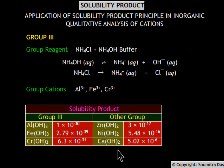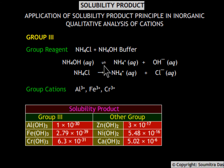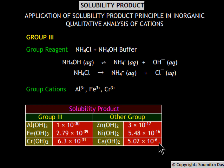In Group 3, the reagent is a mixture of ammonium chloride and ammonium hydroxide. The presence of ammonium chloride shifts the equilibrium of ammonium hydroxide to the left via the common ion effect, making very little hydroxide ion available. However, the reduced hydroxide ion concentration is still enough to precipitate the Group 3 cations as hydroxides because their solubility product is low. Cations from other groups have hydroxides with a greater solubility product and so do not precipitate.